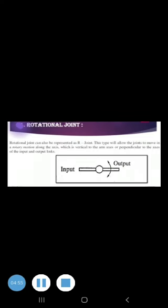The third joint is rotational joint. This is also called Type R joint. This type provides rotational relative motion with the axis of rotation perpendicular to the axis of the input and output link.